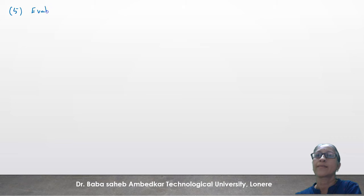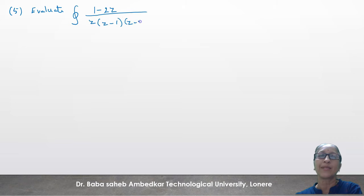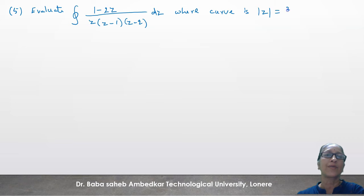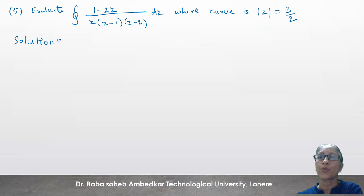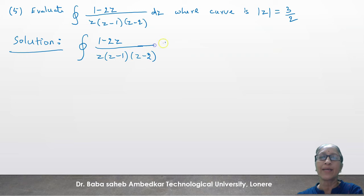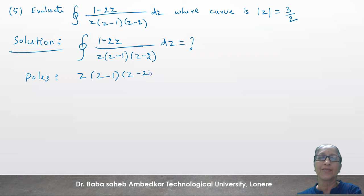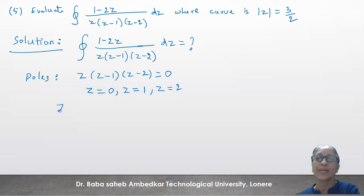Next question (Example 5): evaluate the contour integral of (1−2z)/[z(z−1)(z−2)] dz where curve is |z| = 3/2. First, find poles by equating the denominator to 0: z(z−1)(z−2) = 0 gives z = 0, z = 1, and z = 2. So z = 0, 1, 2 are the three poles.